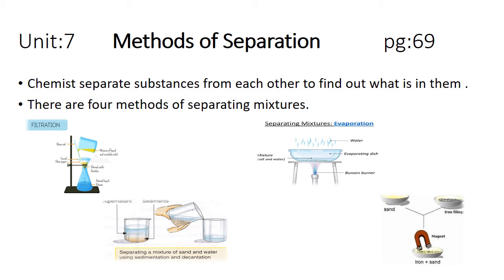We are going to start with Unit 7, Methods of Separation, Theory 69. As I have told you earlier, the chemists separate substances from each other to find out what is in them. The main reason for separating things is to find out how these things are made and what substances are present in a particular mixture or solution.